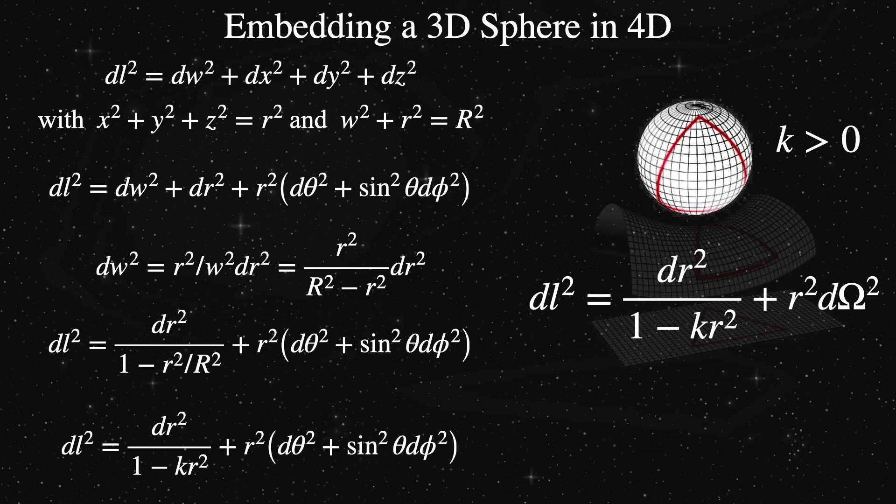We can then define K to be the inverse of big R-squared. Here, K is the curvature constant and can range from plus big values to zero to minus big values. Previously, in the hyperspherical coordinates, it was either plus one or zero or minus one. This K is different. The final form of this metric for positive values of K is given on the right, where we've once again used the isotropy of space to emphasize the simple angular dependence.